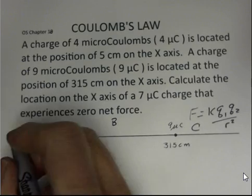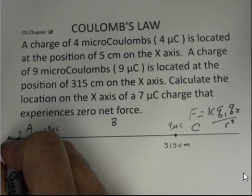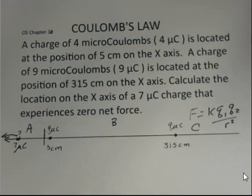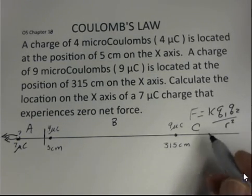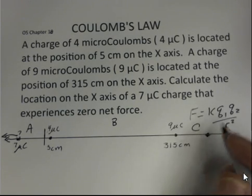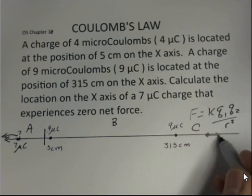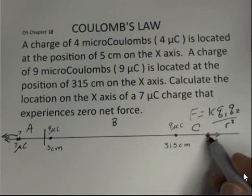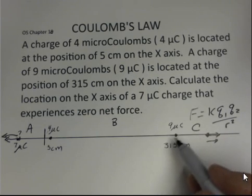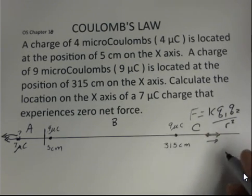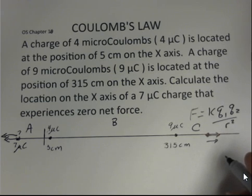Out in region A, the charge is repelled from the 4 microcoulombs and also repelled from the 9 microcoulombs. Could I put the charge out in region C? You'd quickly see the same problem — the two forces are both to the right. This positive charge is repelled by both the 9 microcoulombs and the 4 microcoulombs, so we can't have a net force of 0.